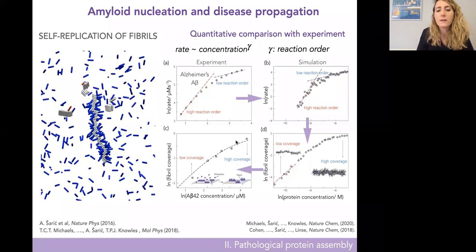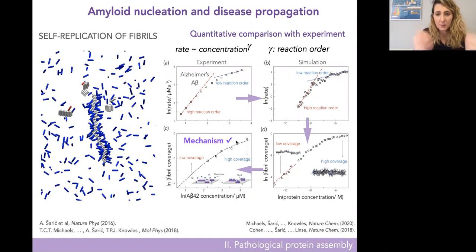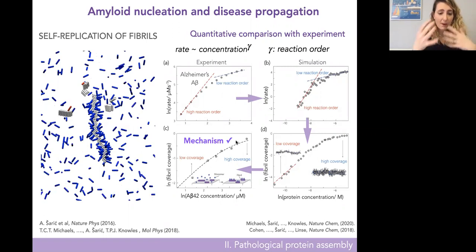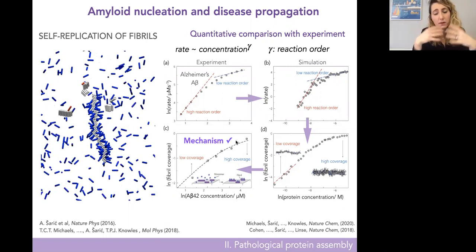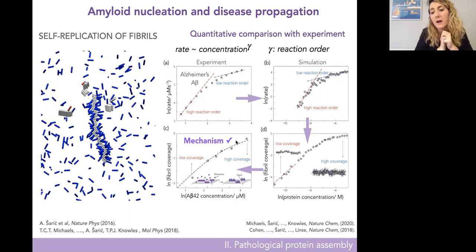We suggested they measure the same in experiments using SPR — they measured the coverage of fibrils with healthy proteins — and found the same behavior: where the reaction order changes, the fibril surface also saturates. The conclusion is that this process is driven by the adsorption of healthy proteins onto the fibril surface. Once you have this bidirectional feedback between experiments and simulations, you can study how environmental conditions influence this process and introduce inhibitors.